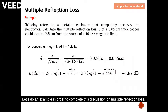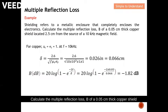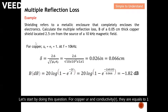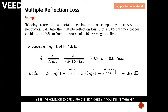Let's do an example. A shield refers to a metallic enclosure that completely encloses electronics. Calculate the multiple reflection loss B of a 0.05 centimeter thick copper shield located 2.5 centimeters from the source of a 10 kHz magnetic field. Remember, for a magnetic field we need to consider multiple reflection loss; for an electric field we ignore it. For copper, μr and conductivity ratio are equal to 1, and we are working at 10 kHz.